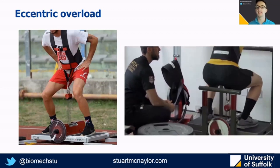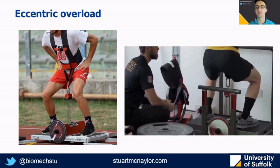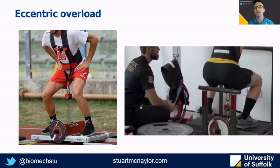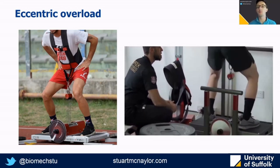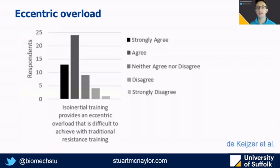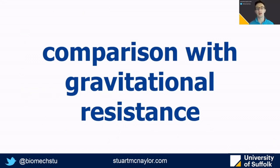During flywheel resistance exercise we can exert eccentric resistance that is sometimes greater than the concentric force generated. This potential for greater intensity during the eccentric phase is one of the most frequently cited advantages of flywheel training. In a survey from Kevin De Kaiser's PhD thesis, the majority of practitioners using flywheel training with athletes agreed that eccentric overload was an advantage. The survey also showed that the flywheel squat is the most frequently prescribed exercise, which is why I'll now focus on comparing it with gravitational resistance exercises.